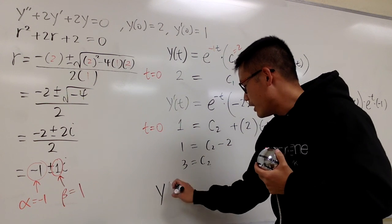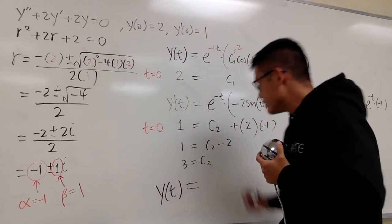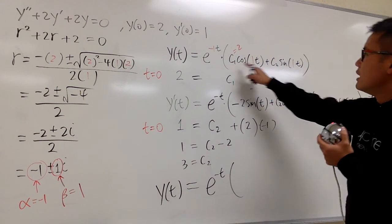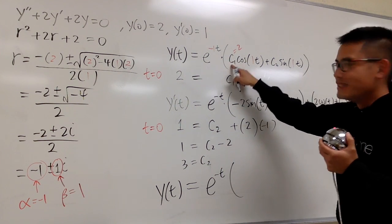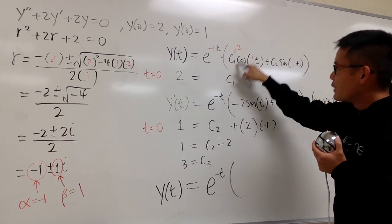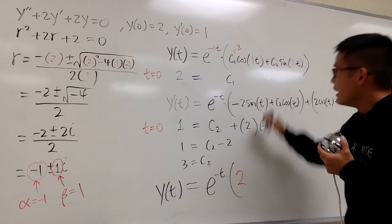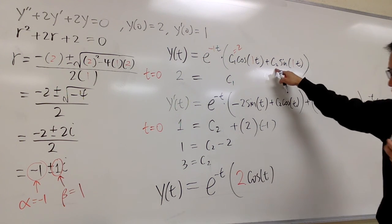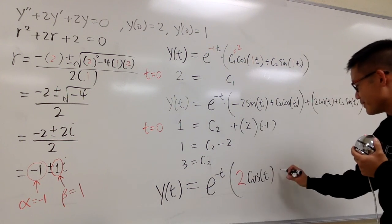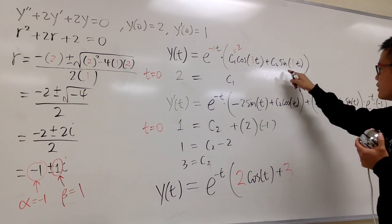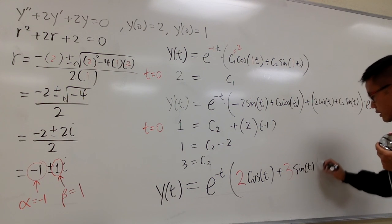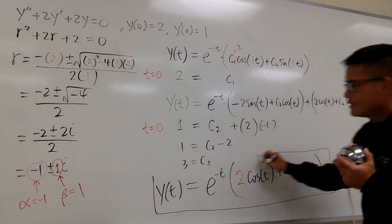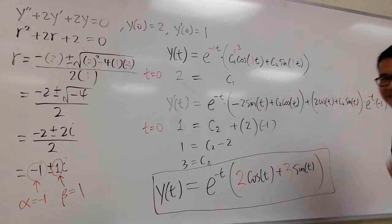At the end, y of t equals e to the negative t times the quantity 2 cosine t plus 3 sine t. And that's the final answer.